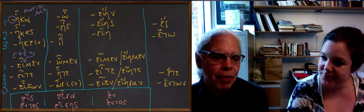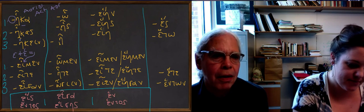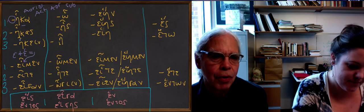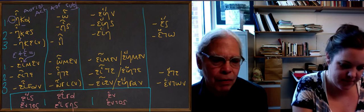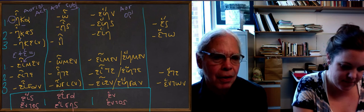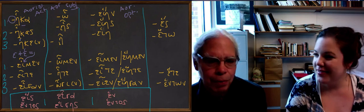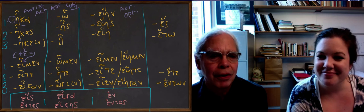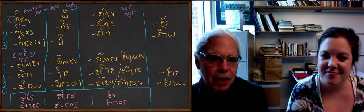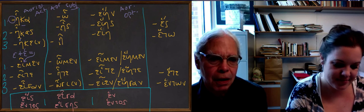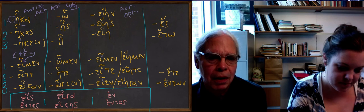Notice what happens when you get to the aorist subjunctive. The only thing that's left of the stem, because of the contraction of the he, is just the h. So it's hō, heis, hei, hōmen, hēte, hōsi. Remember how the present subjunctive of the verb to be looks. It's just hō, heis, hei, hōmen, hēte, hōsi, because there's nothing left of the stem of the verb to be. In the same kind of thing happens in the optative, you get just the h, heien, heies, heie, heimen, heite, heien, or with the iota-eta optative, heimen, heite, heiesan.